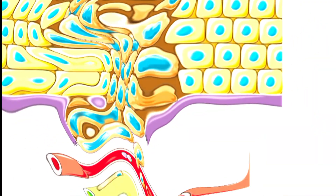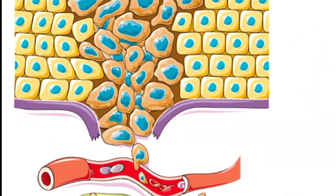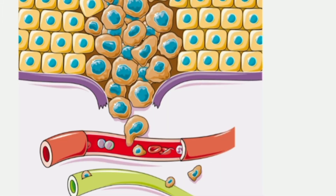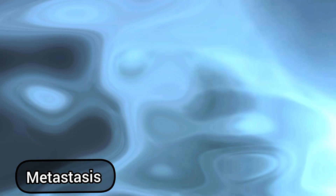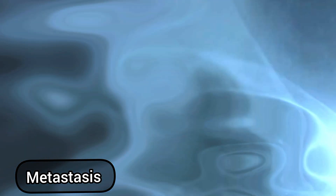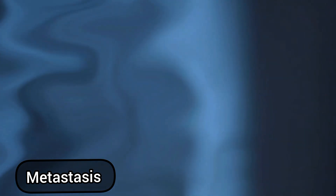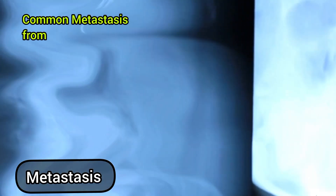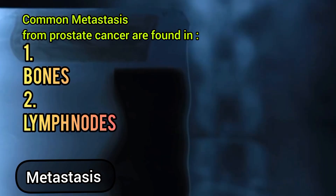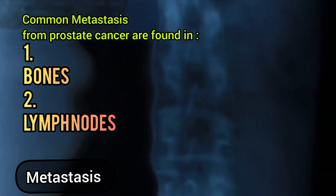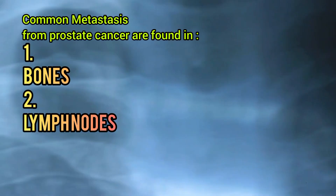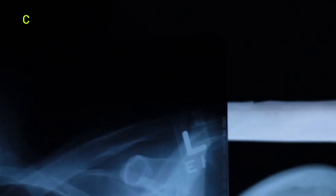In time, some abnormal cells can break away and spread to other parts of the body and form other cancers. These are called metastases. Common metastases from prostate cancer are found in lymph nodes and bones. Metastases in the liver, lungs, brain, and other organs are also found.